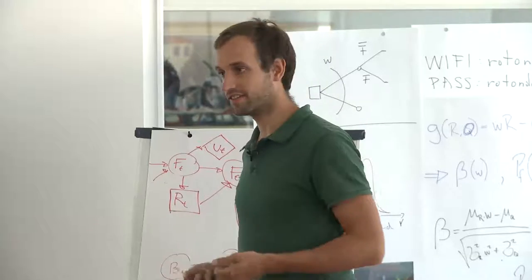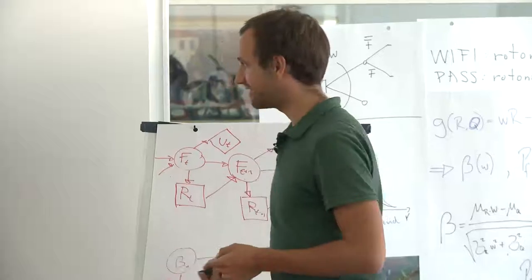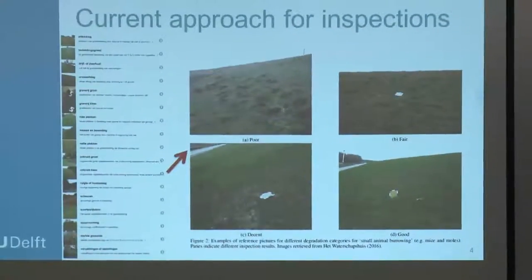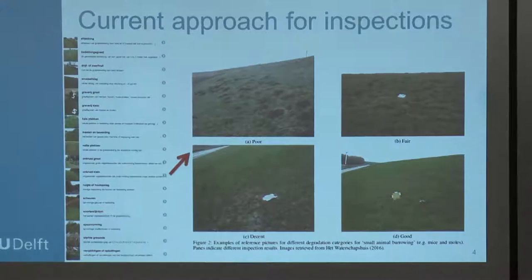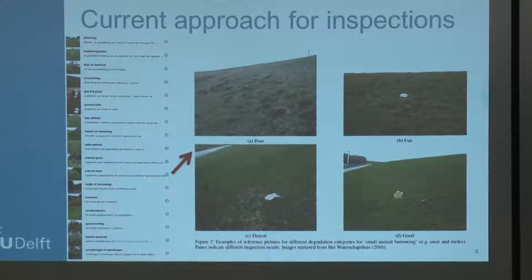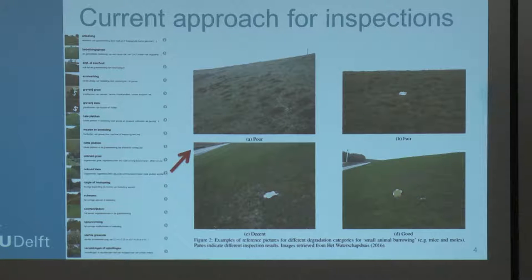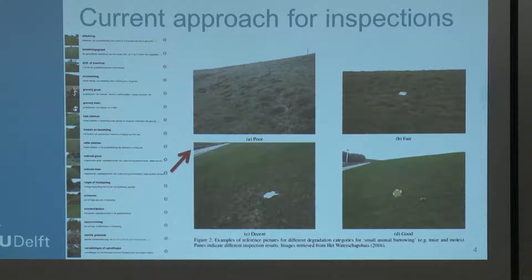The grass revetment has to be kept at a certain state. Currently there's an inventory of damage mechanisms — a quick count gives about 17 or 18 different things that inspectors have to inspect. Practically all inspections are done visually, so they have to rate defects for all these 17 different mechanisms, which is quite a lot, and most likely not all of them are critical.